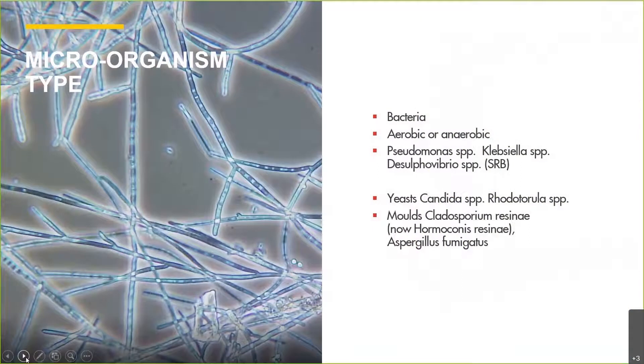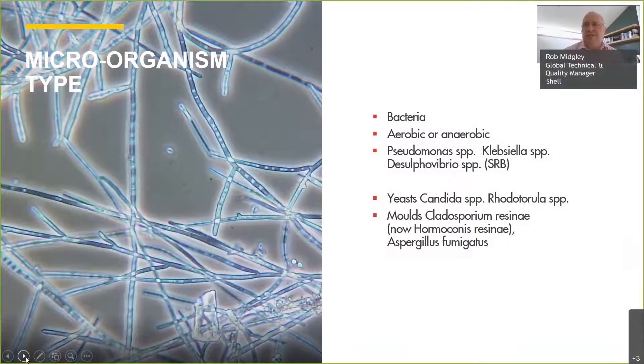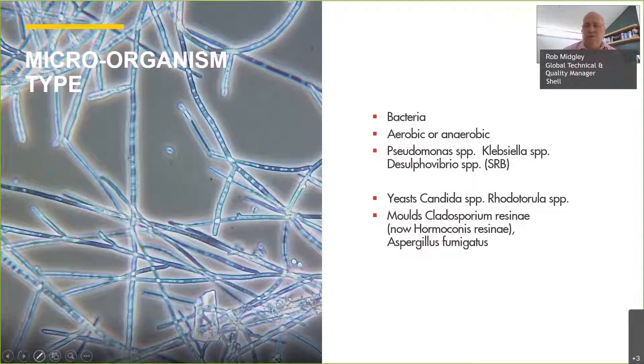We'll start by looking at the different types of microbes. These organisms require three things to survive: a water phase in which to live, so they tend to live not in the fuel itself but in any water; they consume the fuel as a food source; and they need access to oxygen. If you have those three things in combination, then we can start to see microbial growth.